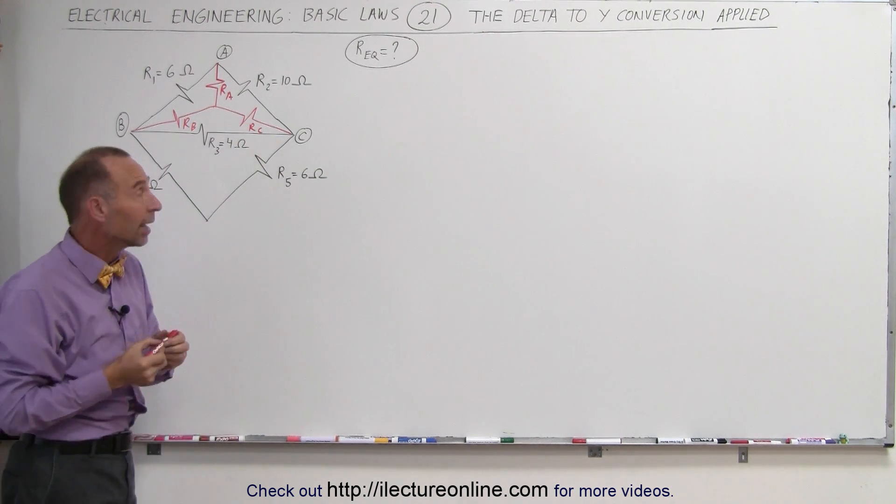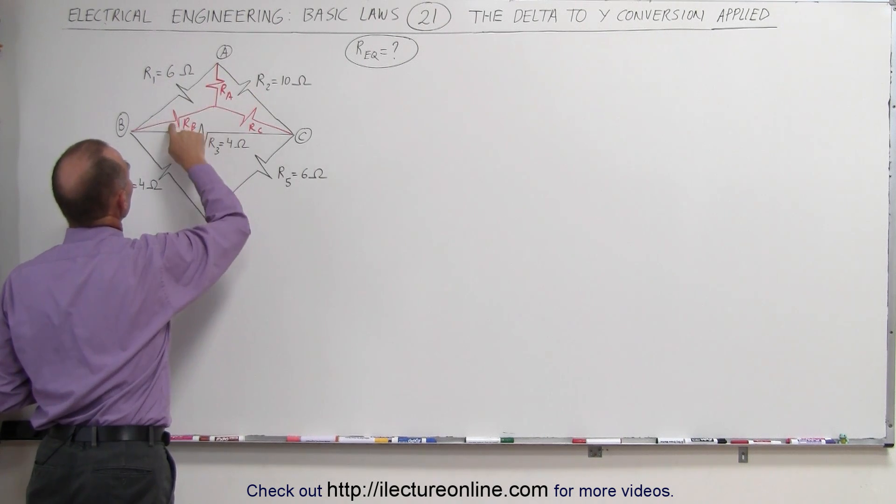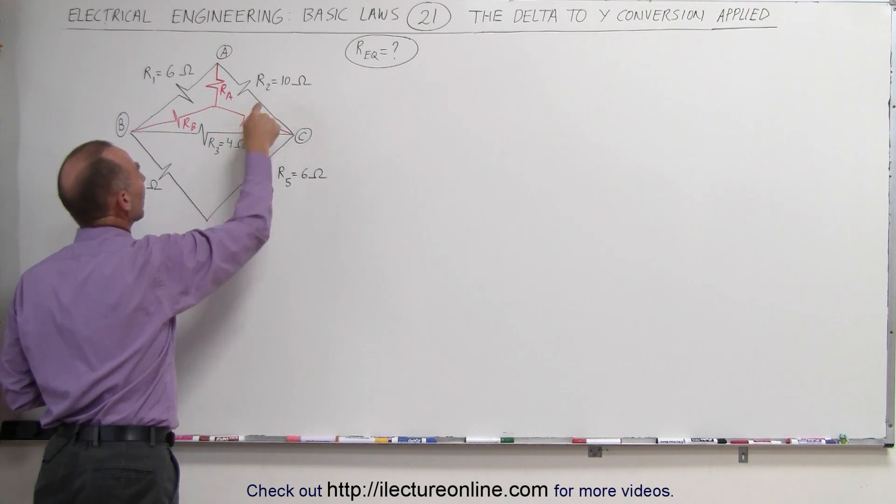It's important to realize that resistor A is between R1 and R2, resistor B is between R1 and R3, resistor C is between R2 and R3.